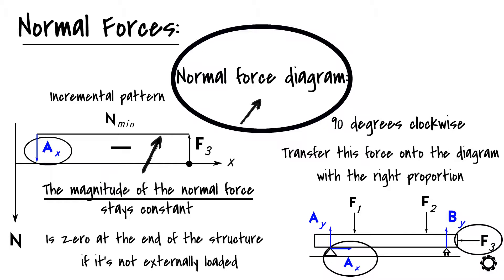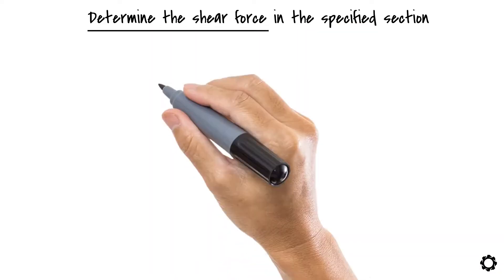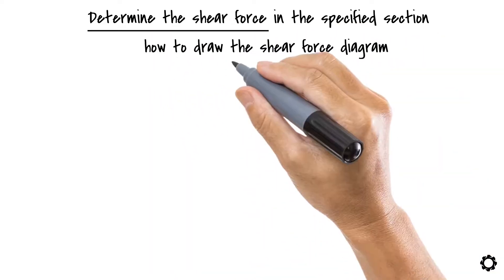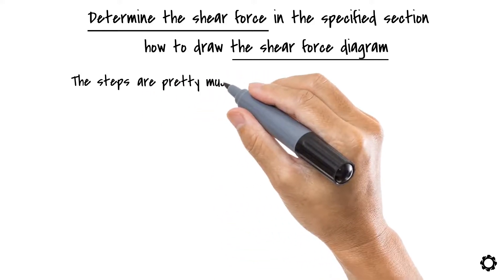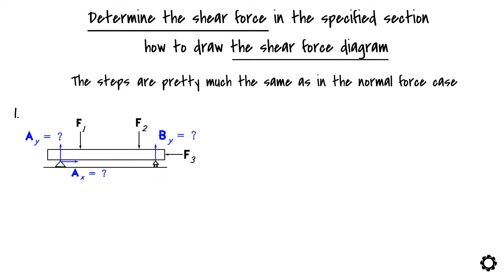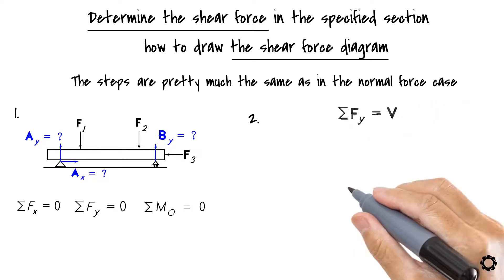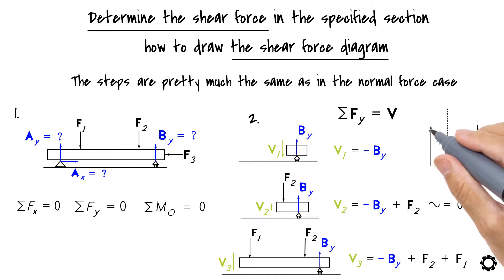Let's move on now to the final topic of this video which is to determine the shear force in the specified section of the structure and how to draw the shear force diagram. Basically, the steps that you can use to solve the problem are pretty much the same as in the normal force case. You start by solving the support reactions in the structure if these are not yet solved. Then you can determine the shear force magnitude in each section by summing the vertical loads and just remember that if you are looking at the right side of the section then the positive direction of the load is downwards and on the left side the positive direction is upwards.